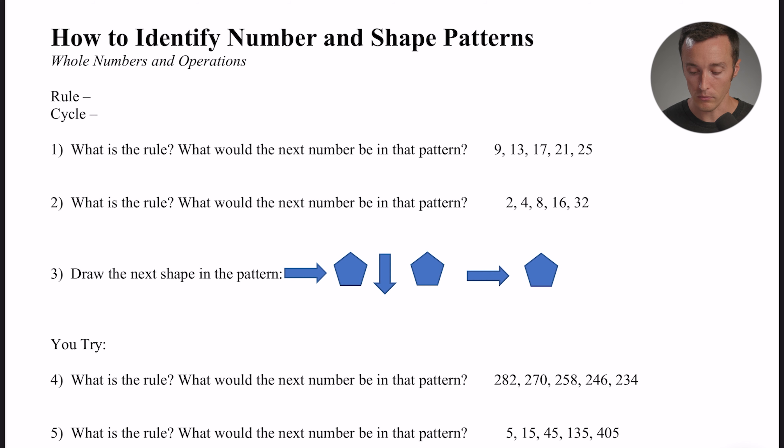So let's get a few definitions to start off with. When we're talking about number patterns, the rule is how you get the next number. That's considered the rule, how you get from one number to the next. And in shape patterns, sometimes we talk about a cycle, and that's one full pattern, like one full rotation through the pattern.